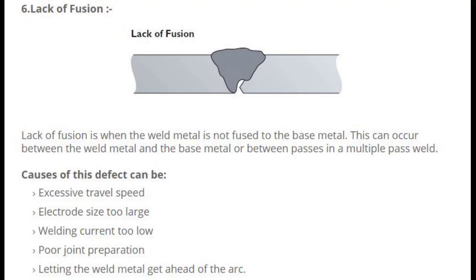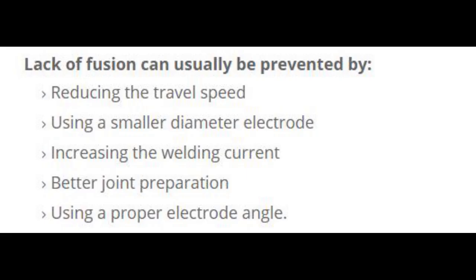Number 6: Lack of fusion. Lack of fusion is when the weld metal is not fused to the base metal. This can occur between the weld metal and the base metal, or between passes in a multiple-pass weld. Causes include: excessive travel speed, electrode size too large, welding current too low, poor joint preparation, and letting the weld metal get ahead of the arc. Lack of fusion can usually be prevented by: reducing the travel speed, using a smaller diameter electrode, increasing the welding current, better joint preparation, and using a proper electrode angle.